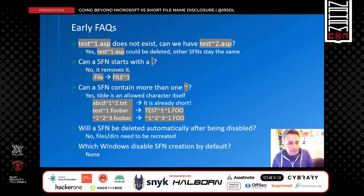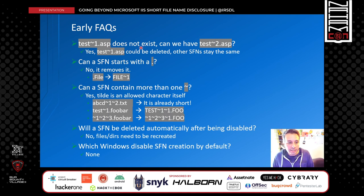Here are some early questions someone might have. Can we have test~2.asp if in the same folder test~1.asp does not exist? The answer is yes. If test~1.asp used to exist and has now been deleted, the system still keeps test~2.asp that was assigned to another file.